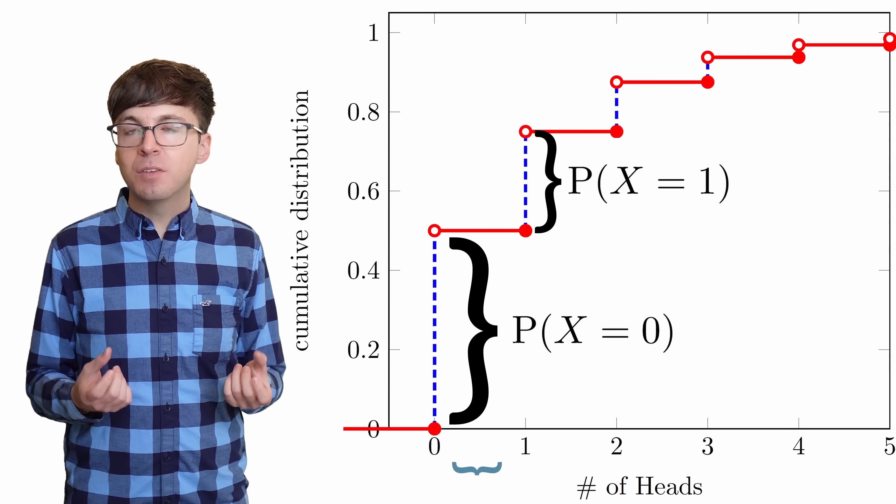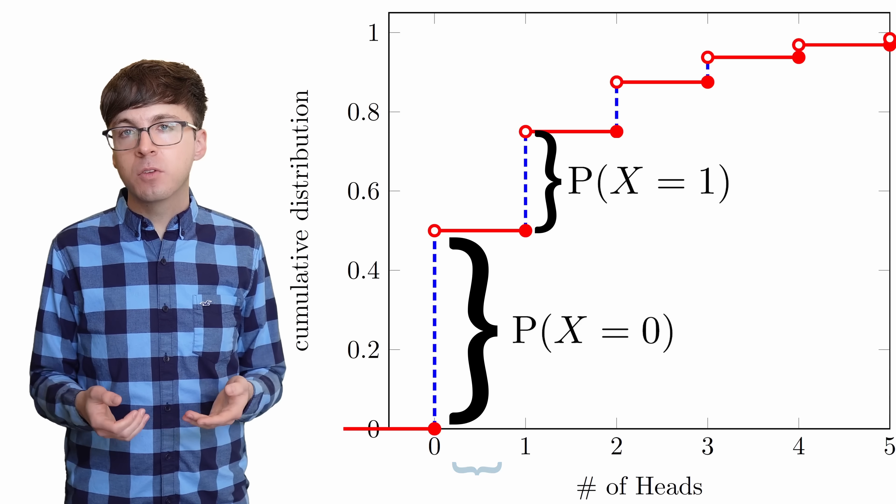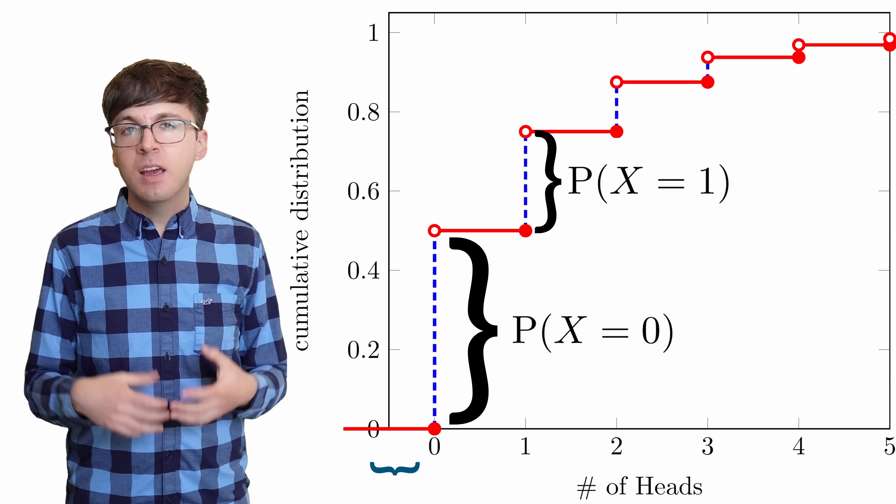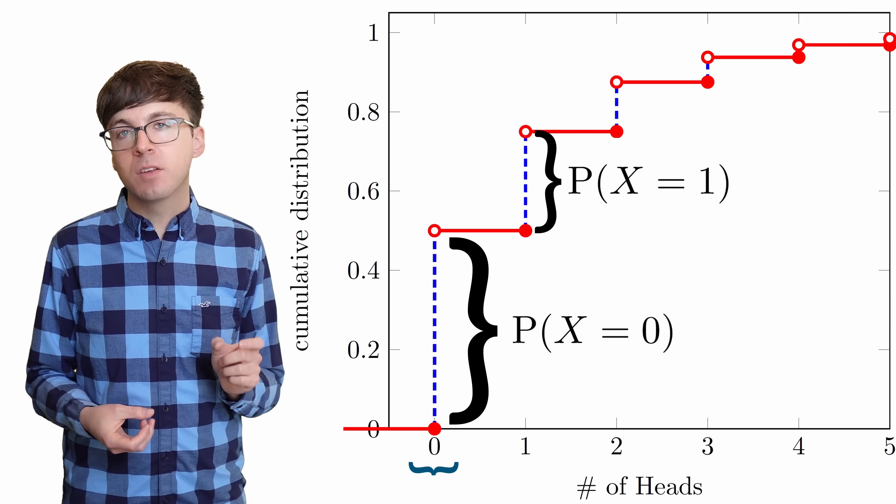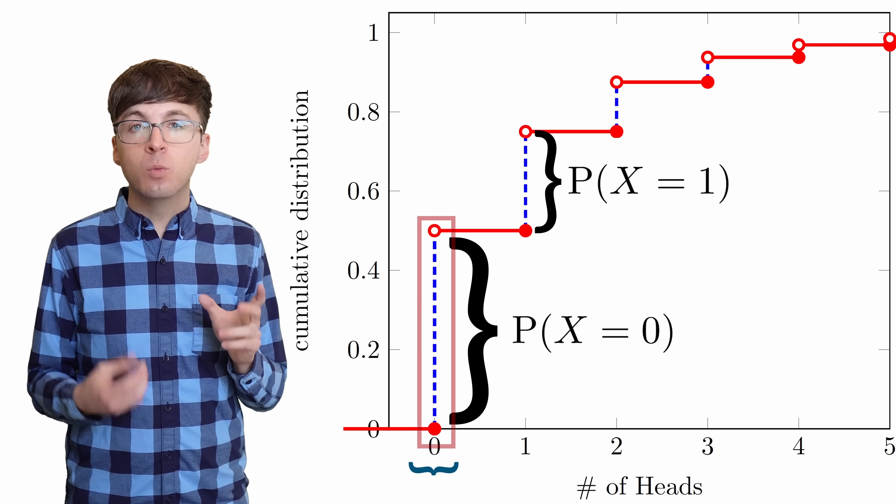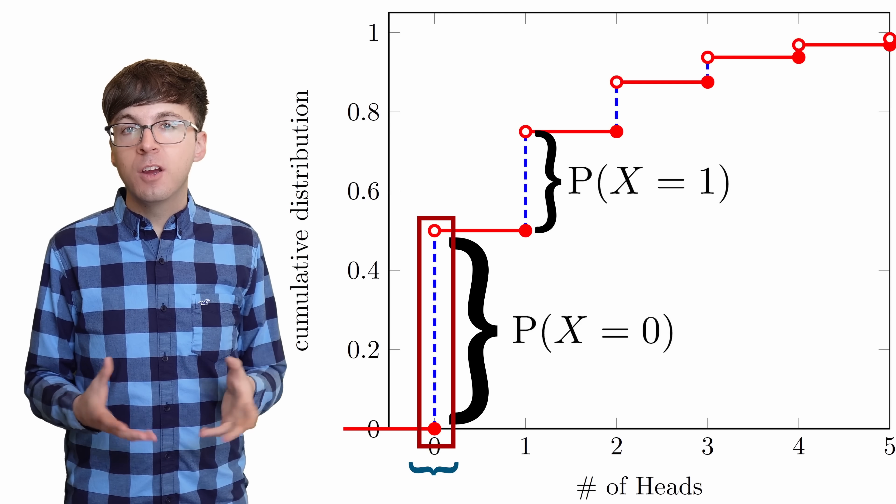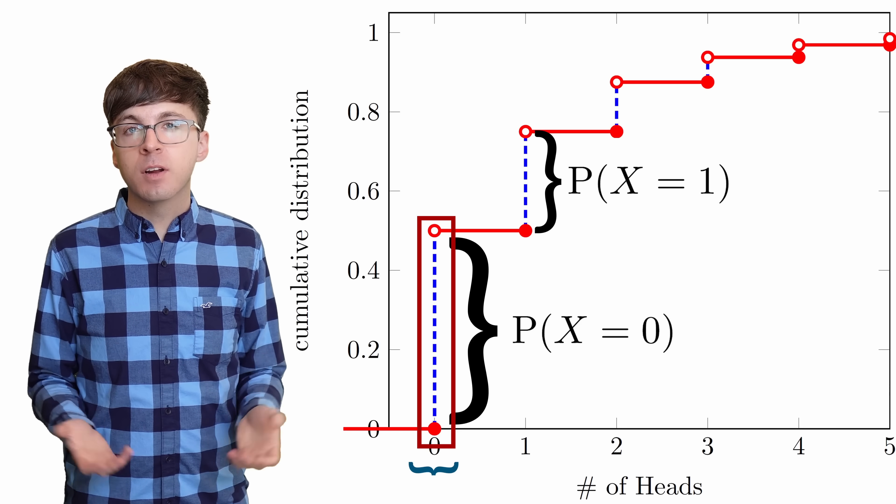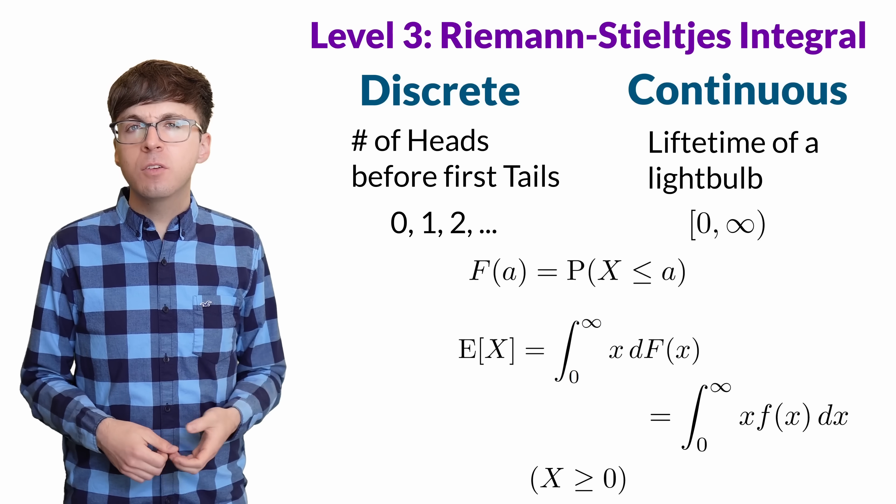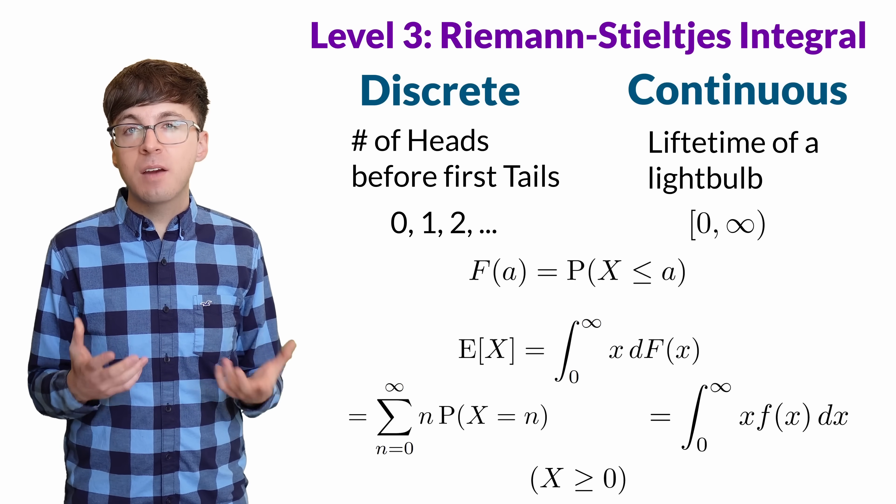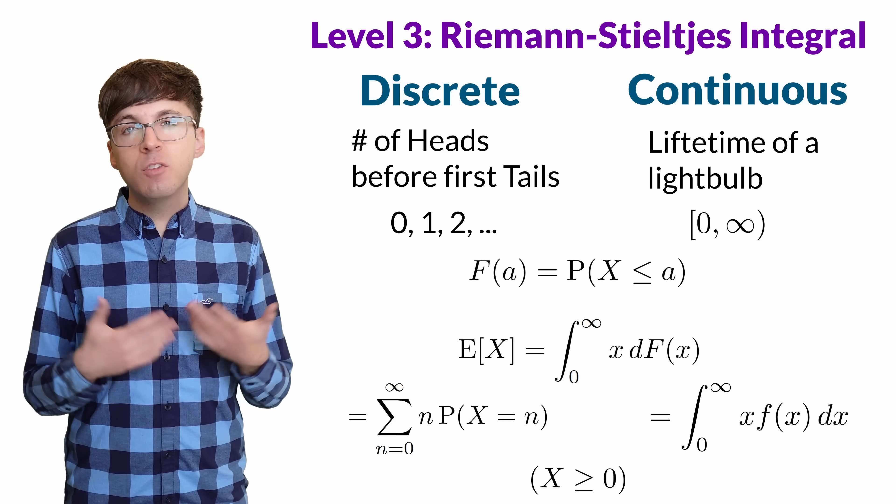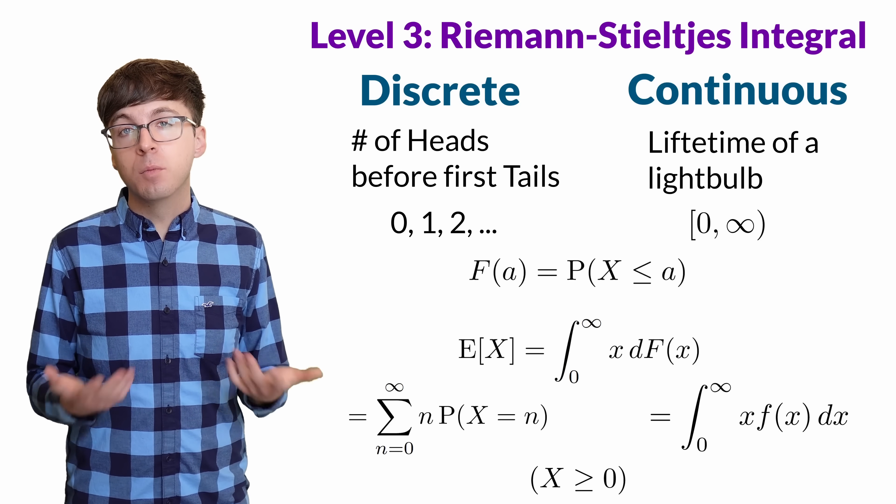Riemann integrals just can't handle these mass points, but the Riemann-Stieltjes integral can. When our partition is fine enough, those differences g(x_i+1) minus g(x_i) are always equal to 0, except when they surround a mass point. And then the difference will equal the size of the jump, which is the probability that random variable takes that value. So the Riemann-Stieltjes integral turns into a sum from before. Now instead of having two separate formulas, we can just use Riemann-Stieltjes integrals for both cases.